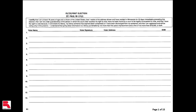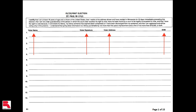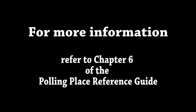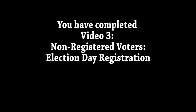After the election judge views the registration documentation, the voter must complete one line of the non-registered roster. The roster consists of pages with election and precinct information, the voter's oath, and blank lines for voters to provide their name, signature, address, and date of birth. Be sure to let the voters complete this page themselves unless they ask for assistance. A voter must always sign his own name or provide a stamp.